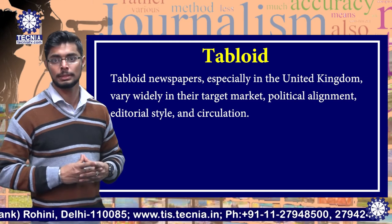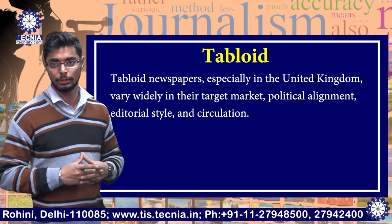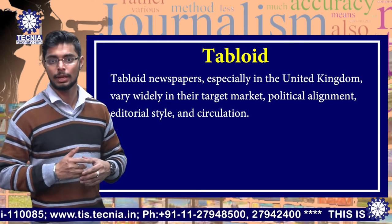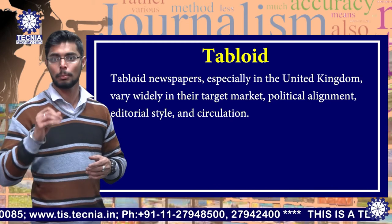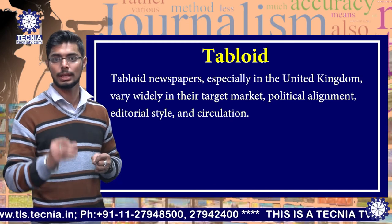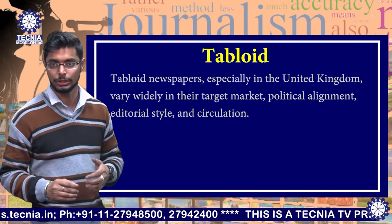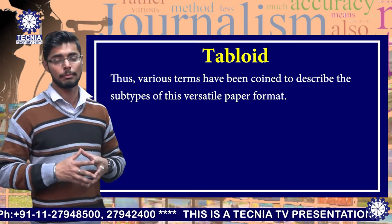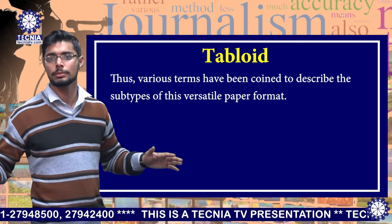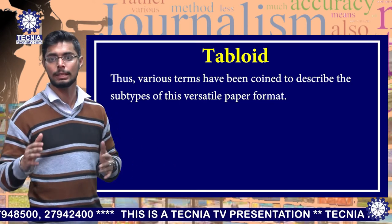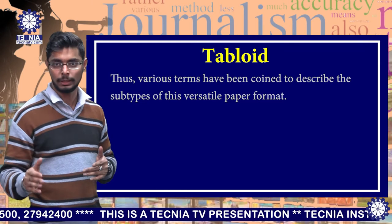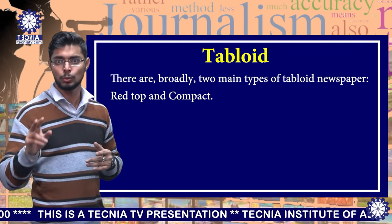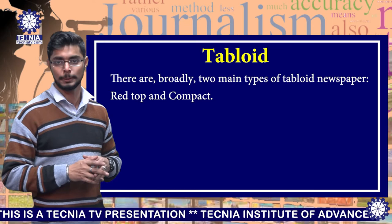Tabloid newspapers, especially in the United Kingdom, vary widely in their target market, political alignment, editorial style and circulation. Thus, various terms have been coined to describe the subtypes of this versatile paper format. There are broadly two main types of tabloid newspapers.